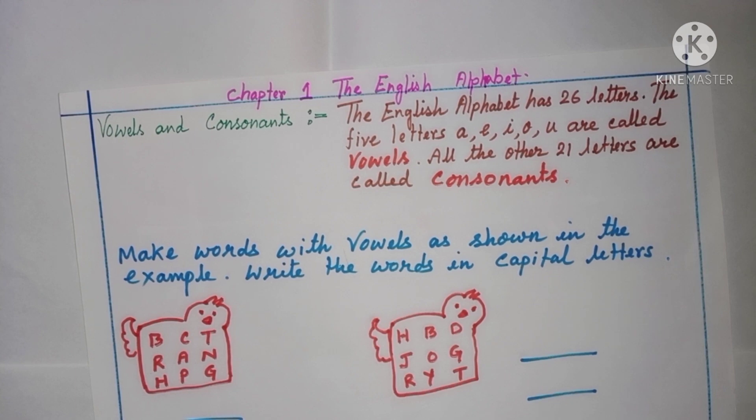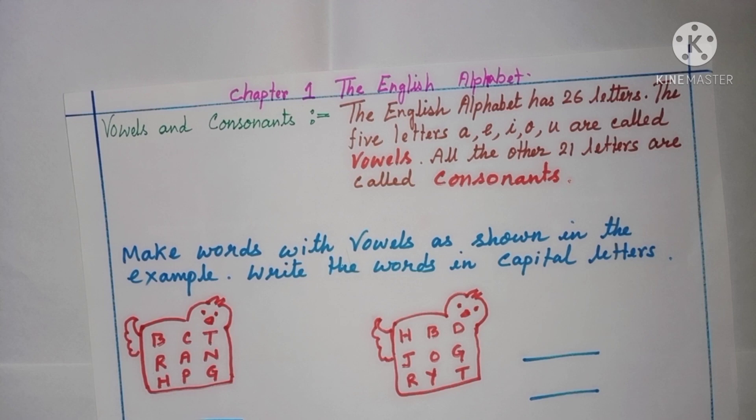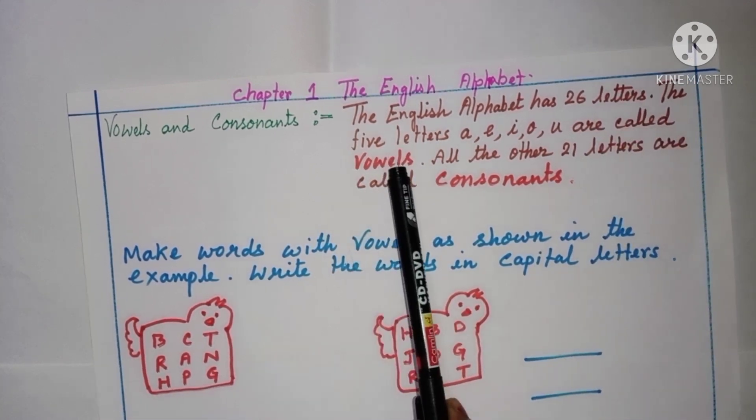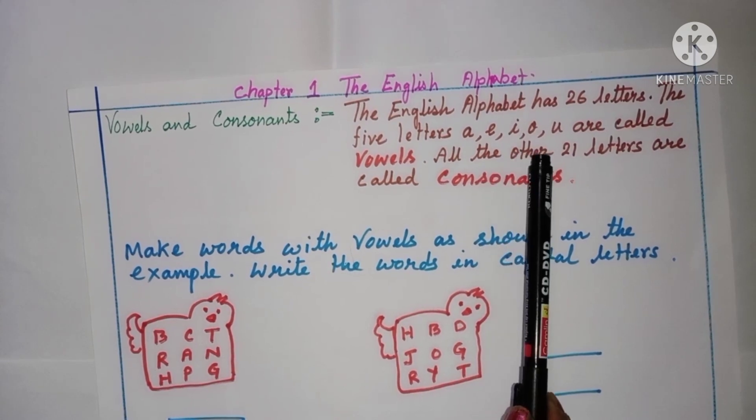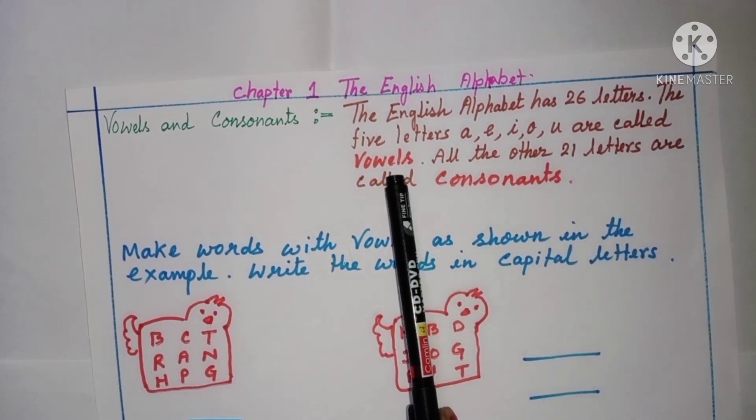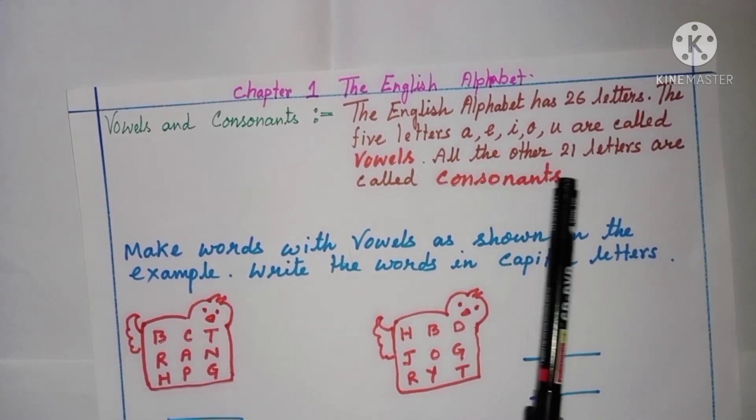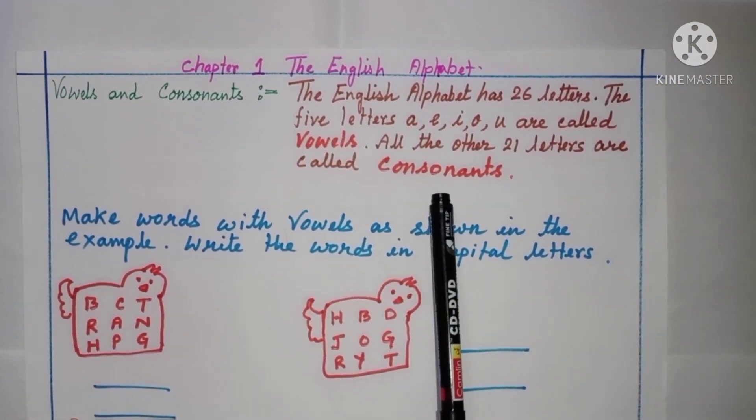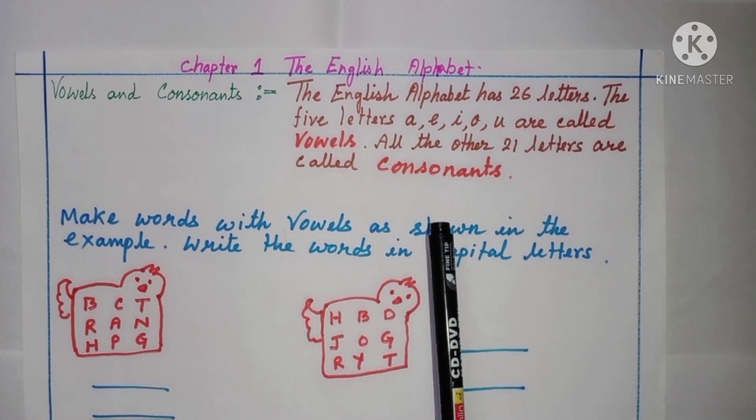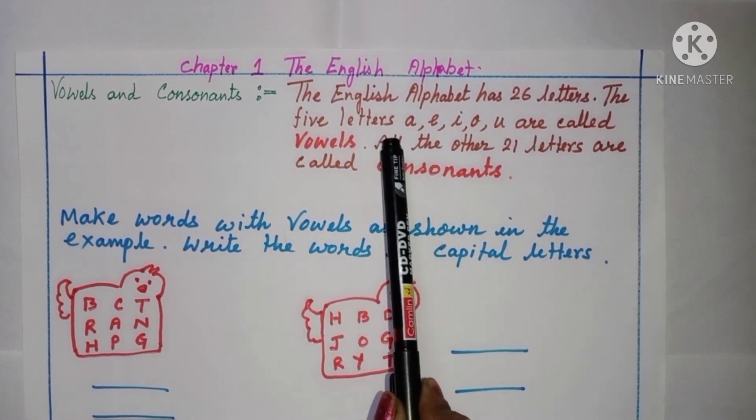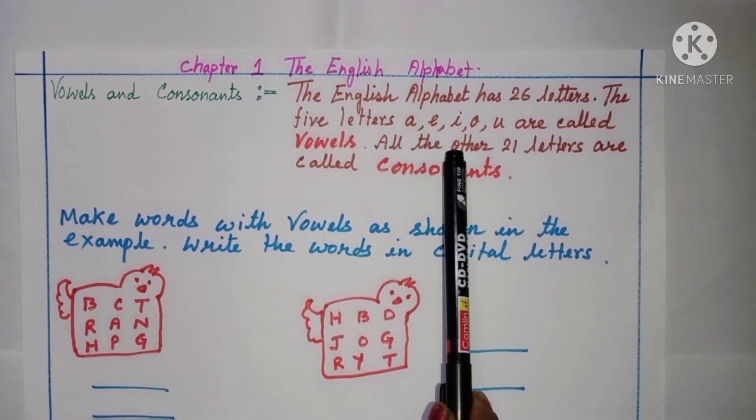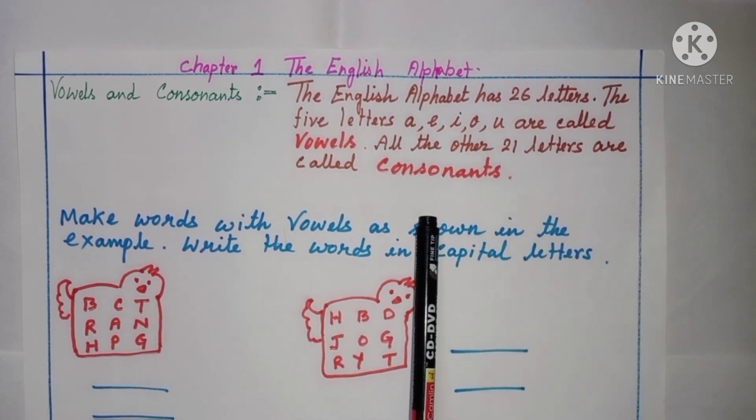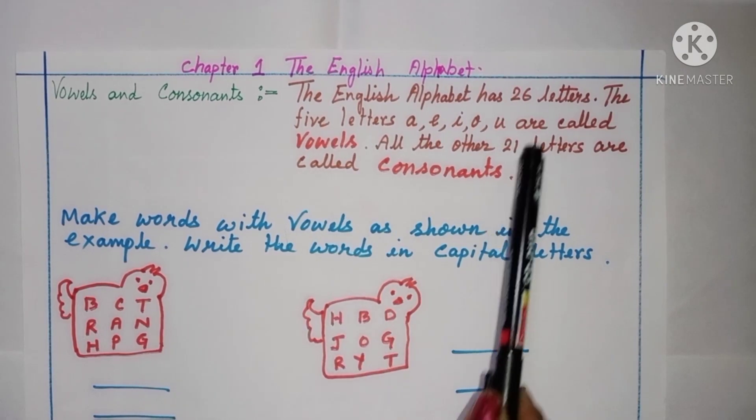The English alphabet has 26 letters. The 5 letters A, E, I, O, U are called vowels. All the other 21 letters are called consonants. This is very easy and I know you have done. So the 5 vowels are A, E, I, O, U and other 21 letters are consonant. And all together there are 26 letters.